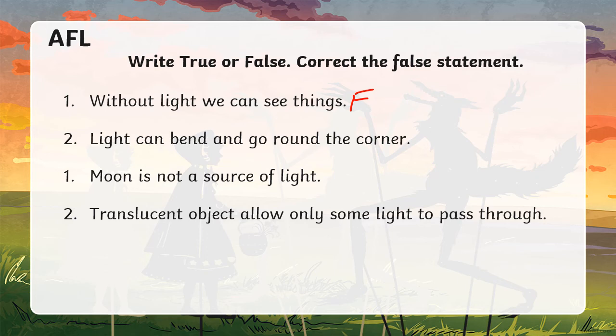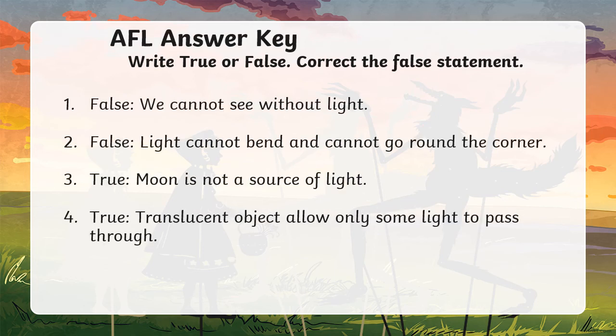Light can bend and go around the corner? No, light cannot bend. Moon is not a source of light: that's true. Moon does not have its own light. Translucent object allow only some light to pass through: that's right, only few lights to pass through. So one and two is false: we cannot see without light, number two is also false, light cannot bend and cannot go around the corner. Yes, moon is not a source of light. Translucent allow some light to pass through.